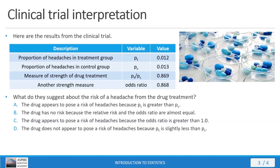That leaves us with answer option D: the drug does not appear to pose a risk of headaches because PT is slightly less than PC. That's exactly what we see in the table — 0.012 is slightly less than 0.013, and that means the treatment is actually lowering the proportion of the sample that experienced headaches. Answer option D is the answer we want to select.